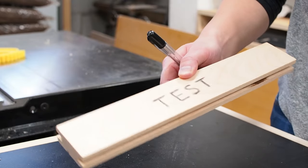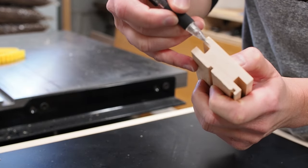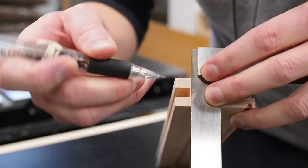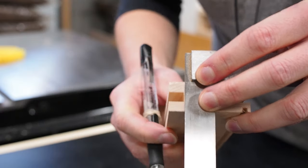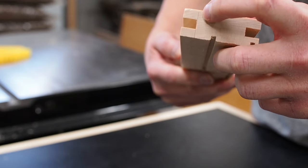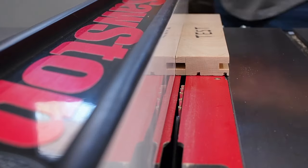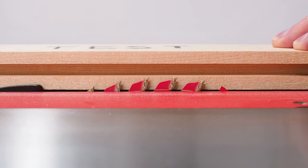With the grooves done, it's time to move on to the tenons, or the tongues. So back to my test piece, I'm going to draw a line flush with the bottom of my groove. This will help me set my table saw so that the tongues are the same depth as the grooves. But before doing that, I need to set the height of the blade. To set the blade, I'm going to use the groove in my test piece as a gauge.